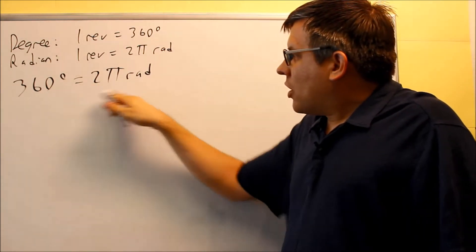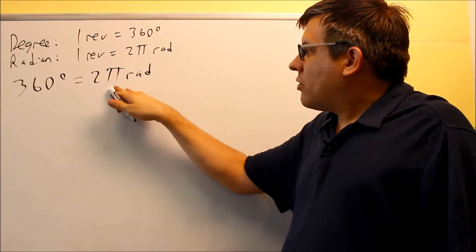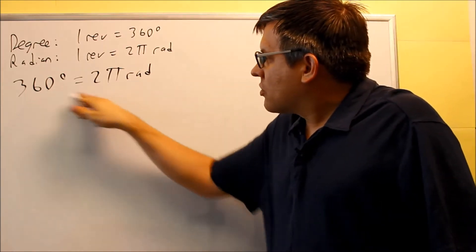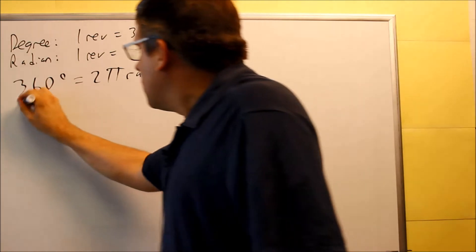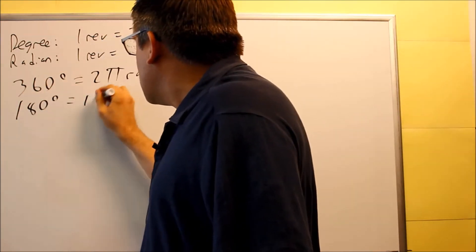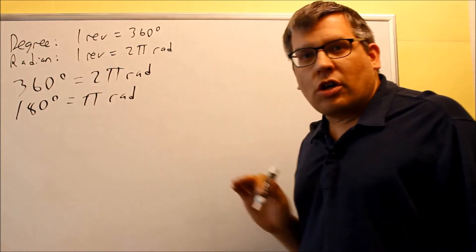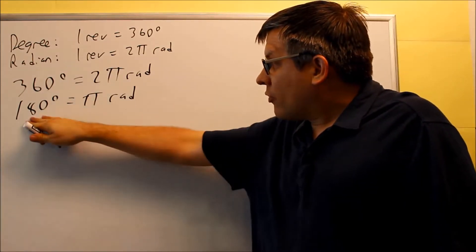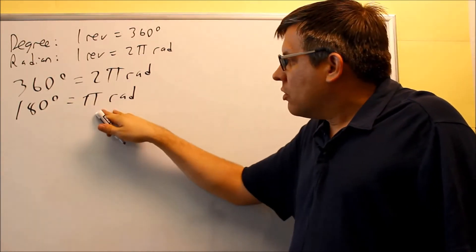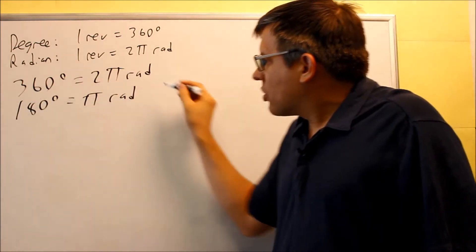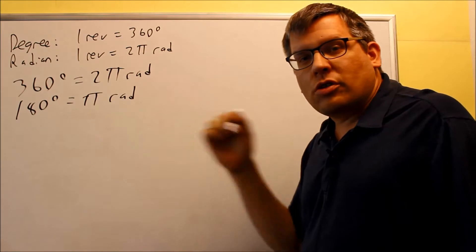This would be the same thing, 360 degrees is the same exact thing as 2π in terms of radians. If I take this and divide both sides by two, then I get 180 degrees is equal to π radians. So that would be another identity that would be true. So half a revolution, 180 degrees, would be equal to π radians. It's this one that we're going to use to come up with a conversion going between the two different units.